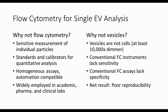So that brings us to flow cytometry. Why should we use flow cytometry? It makes sensitive measurements of individual particles, there are lots of protocols and standards, assays can often be done without wash steps, and it's widely deployed in both research and clinical labs with robots and automation to facilitate analysis. The problem is that vesicles aren't cells — they're much, much smaller, orders of magnitude smaller, meaning they produce much, much dimmer signals. Most conventional flow cytometers designed to measure cells really lack the sensitivity to do a good job measuring vesicles, and the result has been overall poor reproducibility for vesicle measurements.